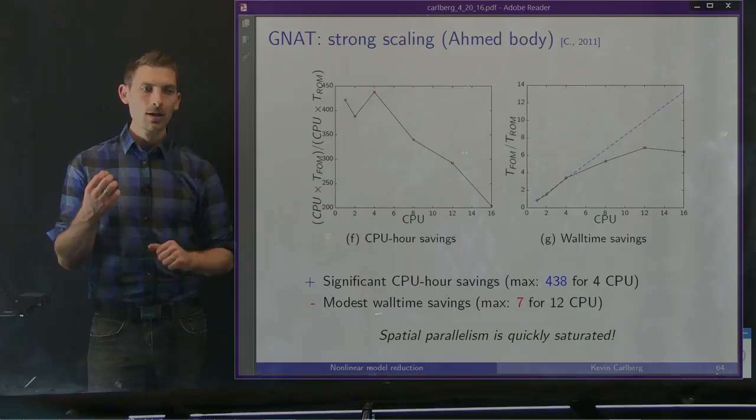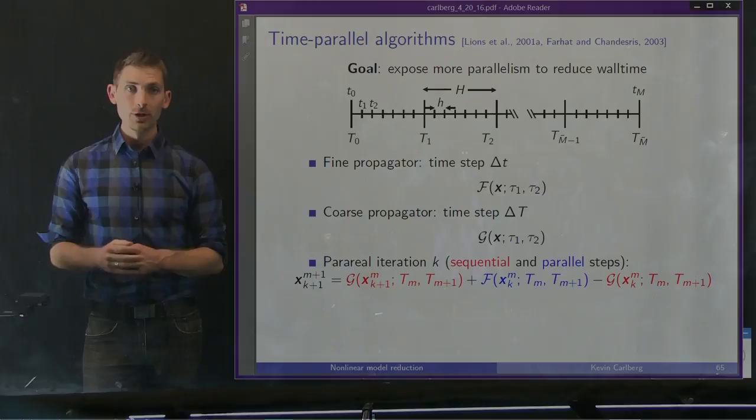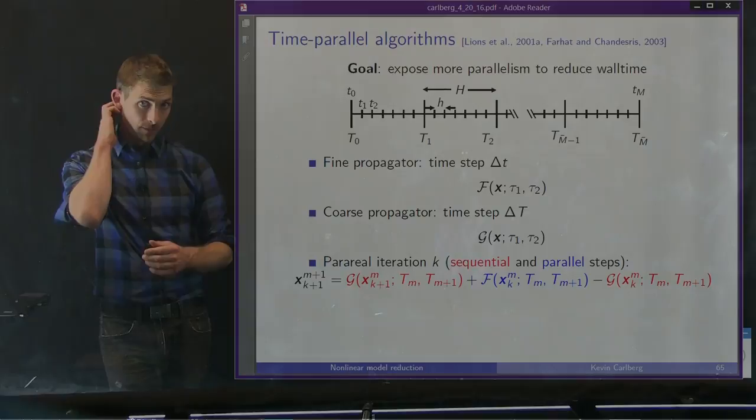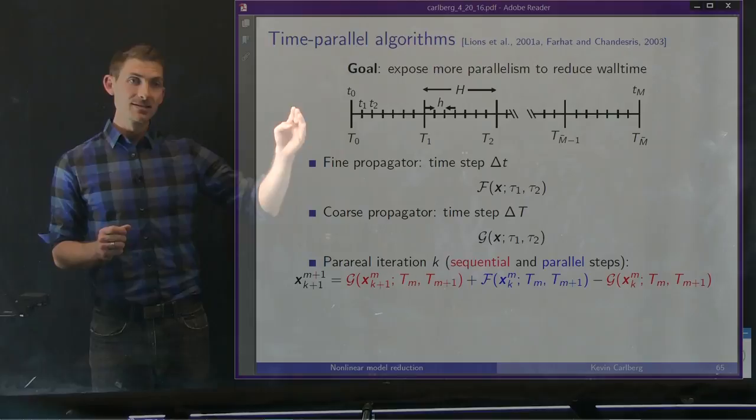So the question is: is there any way we can widen the computational front to improve wall time, even if it incurs additional computation? This led us to the field of time parallel methods. Time parallel methods have been pursued for about 15 years, and the goal of these methods is to expose more parallelism to reduce wall time, even though it incurs additional computation.